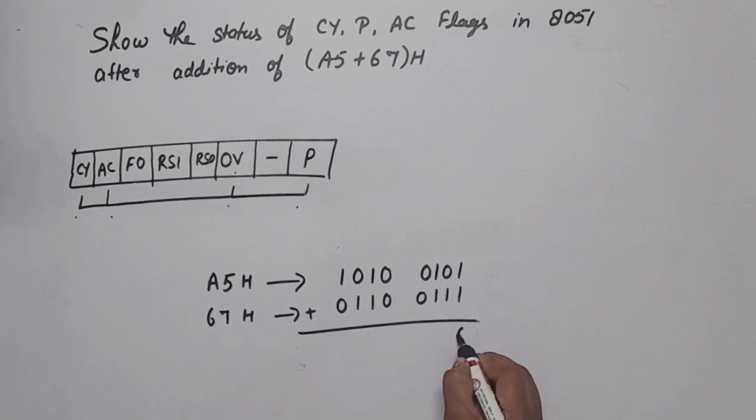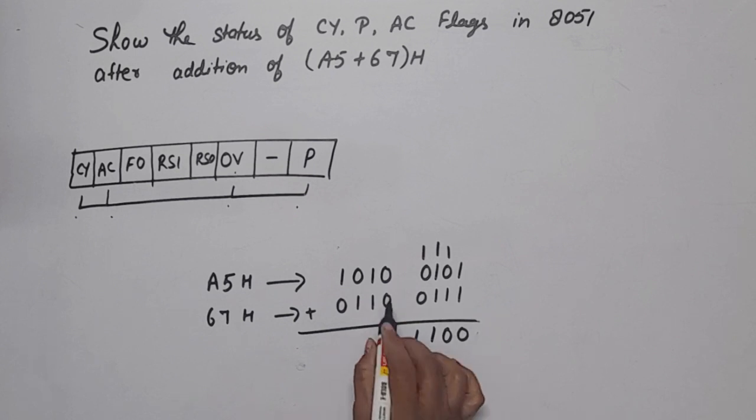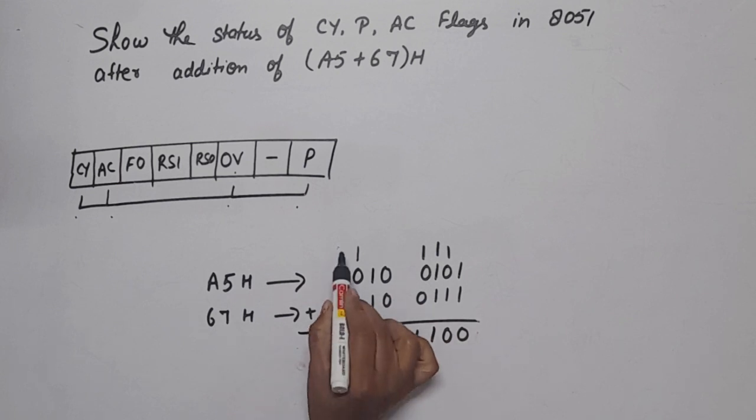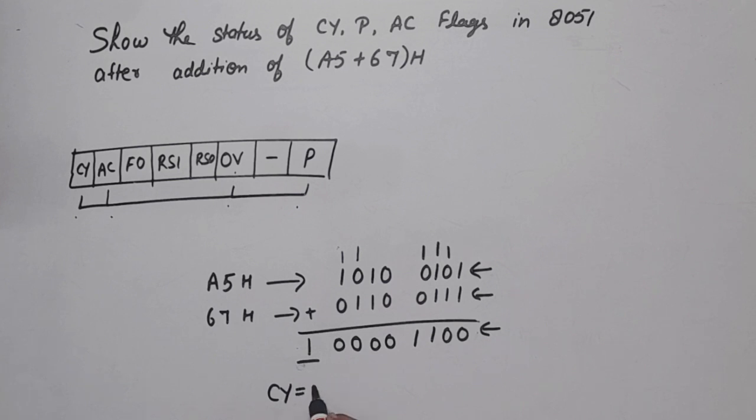1 plus 1 equals 0, carry 1. 1 0 1 equals 0, carry 1. Three 1s equals 1, carry 1. 1 0 0 equals 1, no carry. 0 equals 0. 1 or 1 equals 0, carry 1. 1 0 1 equals 0, carry 1. 1 and 1 equals 0, carry 1. Now, this is 8 bit, but here we have 9 bits. This is an extra bit, that's why CY, the carry flag, will be 1.